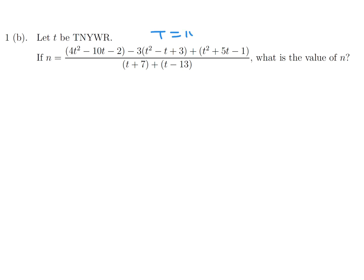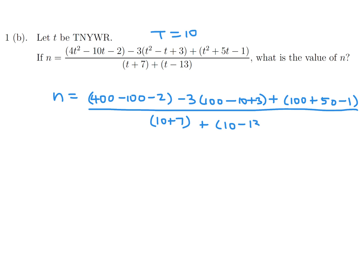T is 10, and n is this big, long expression. What is the value of n? Okay, let's substitute 10. And when you substitute 10 for t, you'd get 400 minus 100 minus 2 minus 3 times 100 minus 10 plus 3 plus 100 plus 50 minus 1, and put it all over 10 plus 7 and 10 minus 13. And then you crunch out these numbers. Anybody can do that. I'll let you guys do it. And when you do it all, it's 12 as the final answer.